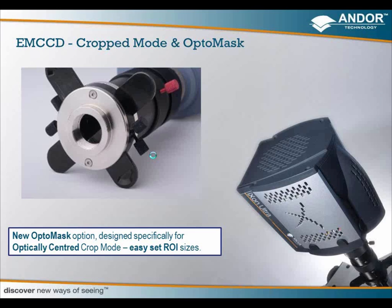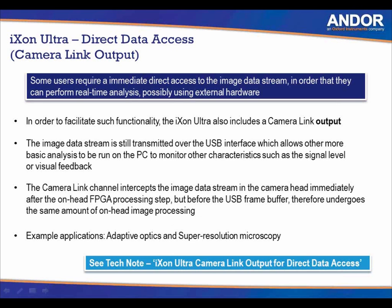Another aspect of the iXon Ultra is direct data access. With the iXon Ultra 897 and 888 — both USB cameras (USB 2 and USB 3 respectively) — you can use a Camera Link output on each camera to access data coming off the camera before it reaches the computer, allowing processing in real time. This is very important for adaptive optics and super-resolution microscopy, and a tech note on this is available on the Andor website.